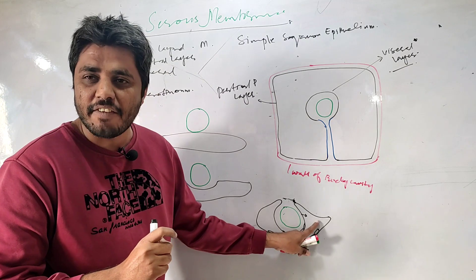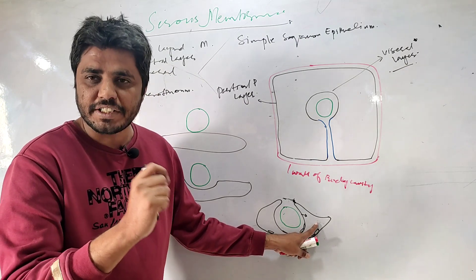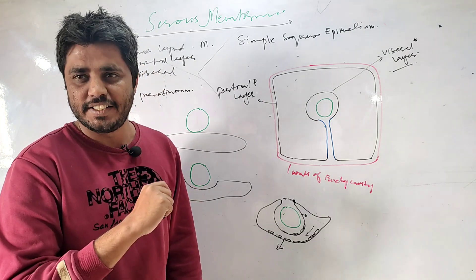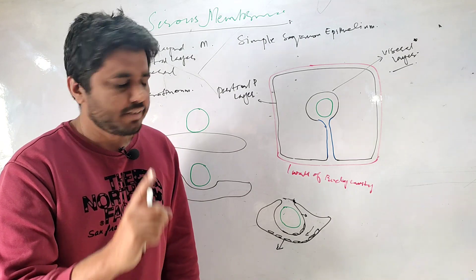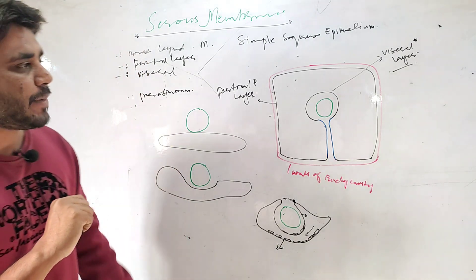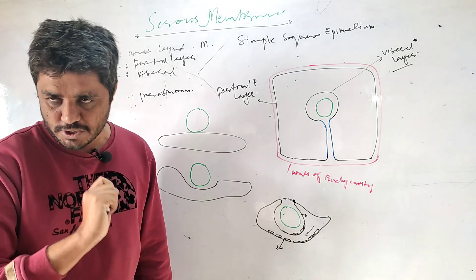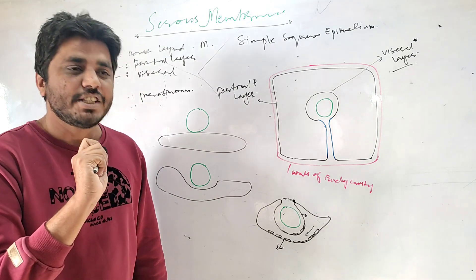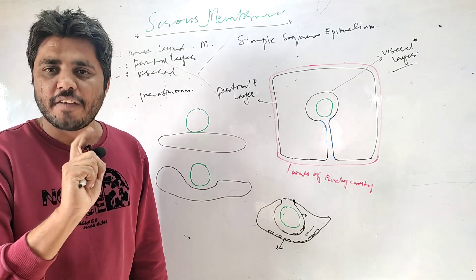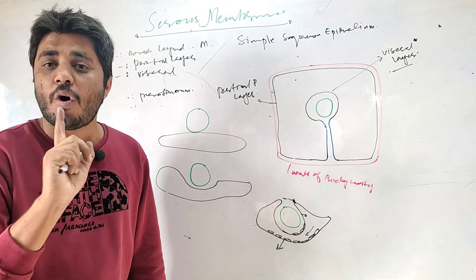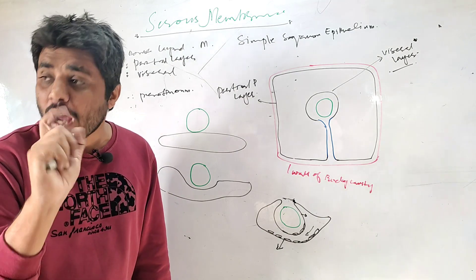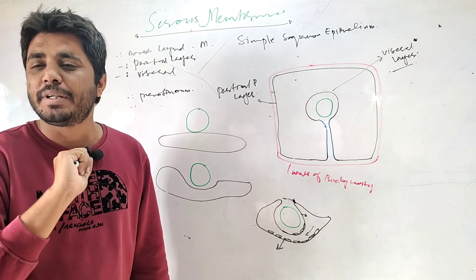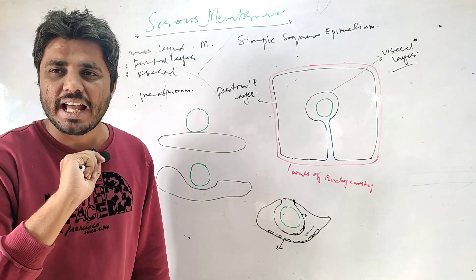There is also a formation of a cavity here — this cavity is called the peritoneal cavity. Listen carefully: serous membranes have special names in each body cavity. If the serous membrane is in the abdominal cavity, it is called peritoneum. If the serous membrane is in the thoracic cavity around the lungs, it will be called pleura. If it is covering the heart, it will be called pericardium.